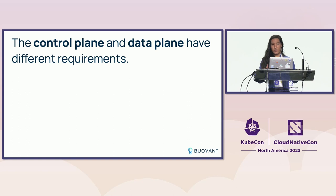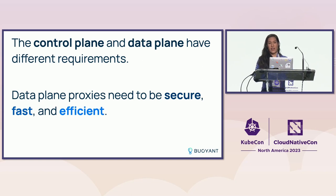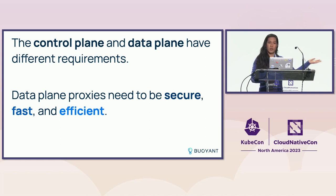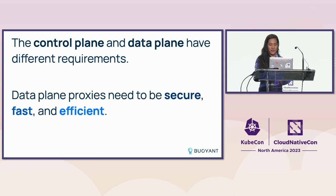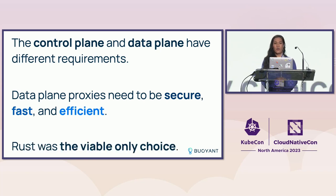Linkerd as a service mesh has two pieces: the control plane and the data plane. The data plane is the proxies where all your network traffic flows through. The control plane sits outside the data path and controls those proxies by pushing configuration down to them and giving them certificates. For those data plane proxies, the requirement that they be secure, fast, and efficient is paramount — they're in the hot path. Any slowness in the proxies manifests as slowness in your application. For us, Rust was the only viable choice.